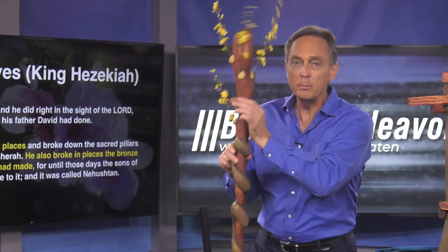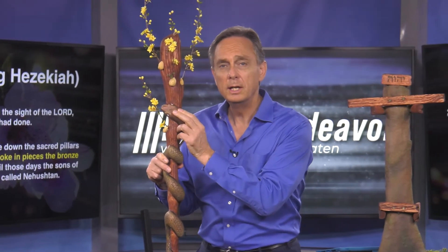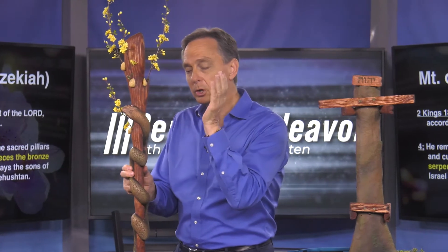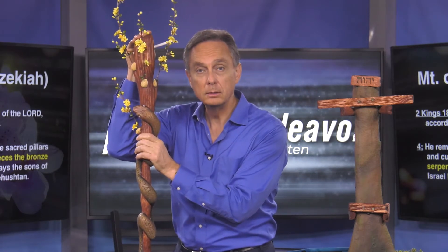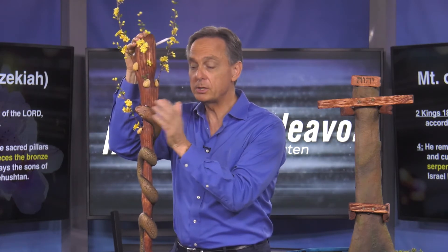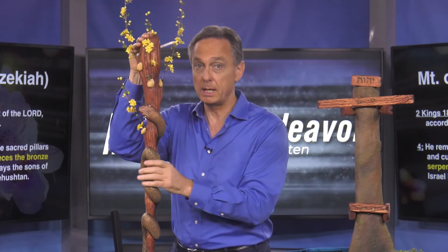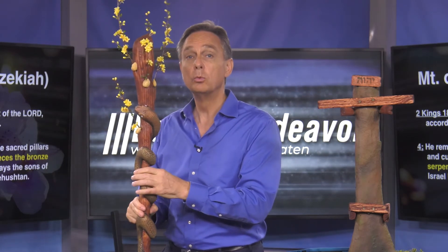For until those days, the sons of Israel burned incense to the bronze serpent, and it was called Nehushtan. This was never meant to be an object of worship. Hezekiah knew that and said, 'This is ridiculous — we're going to remove this, break it, destroy it.' He broke in pieces the bronze serpent on the Mount of Olives, where those high places were, where God was originally worshipped. But the rod itself — there is nothing in Scripture saying it was taken out also.